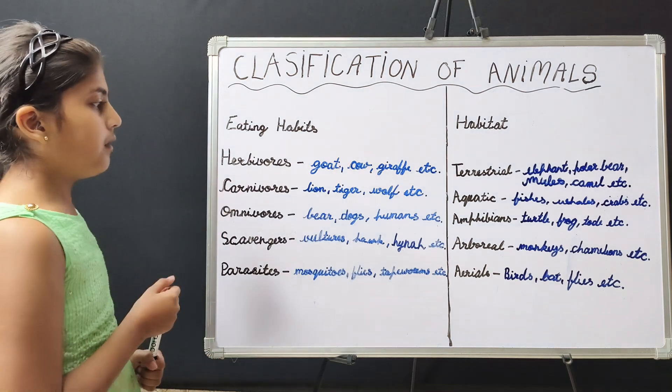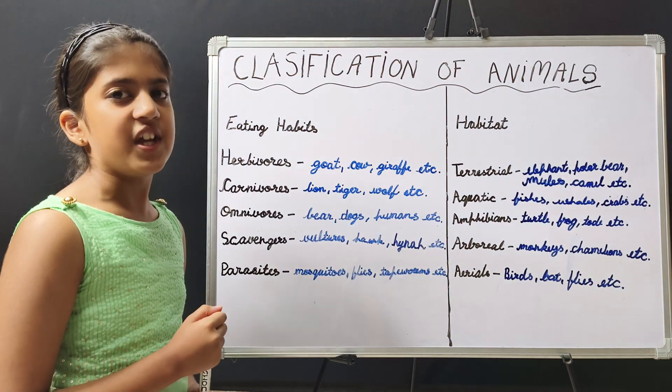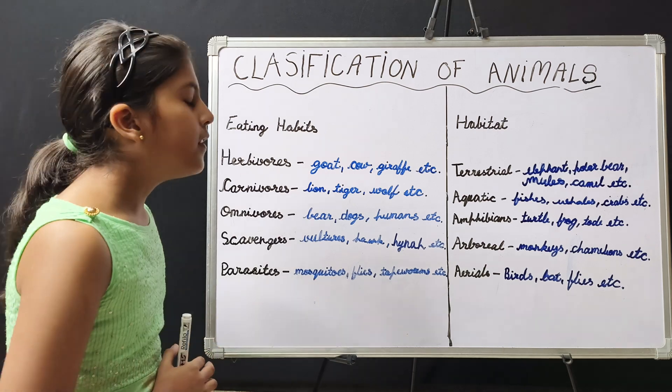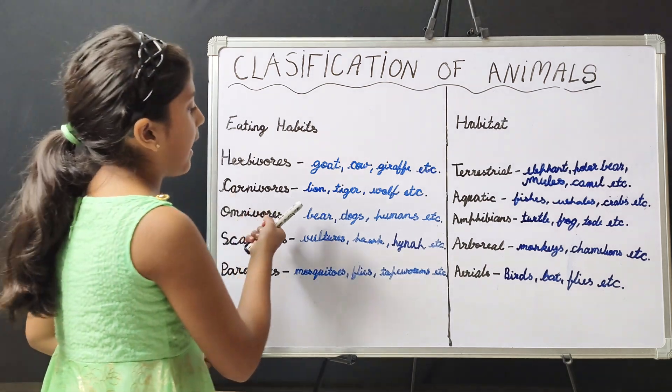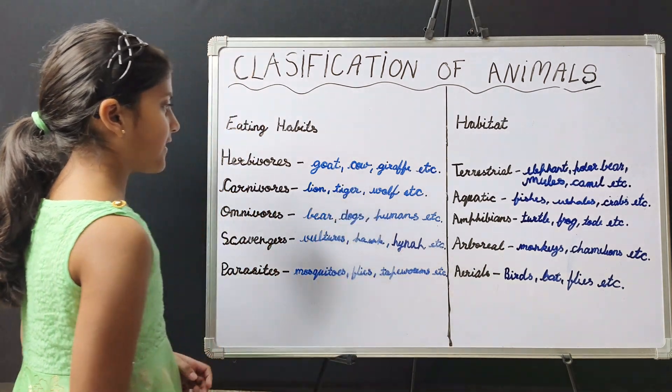Carnivores are those animals which eat other animals. For example, lion, tiger, wolf, etc.